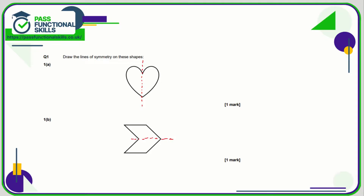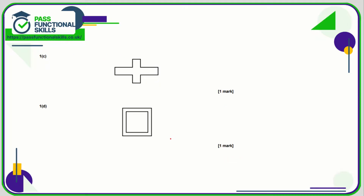Shape b has one line of symmetry going across. Shape c has a line of symmetry right down the middle — the left side sits on the right — and also one going horizontally, so the bottom sits on the top. Shape d looks like two squares and has a line of symmetry going down the middle, across the middle, and two more diagonally, giving four lines of symmetry in total.